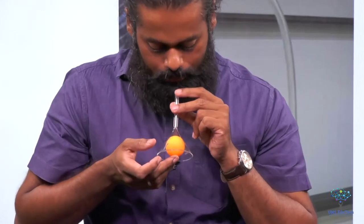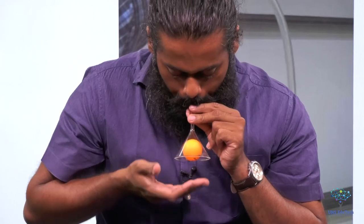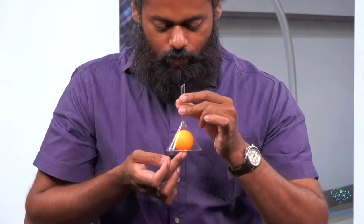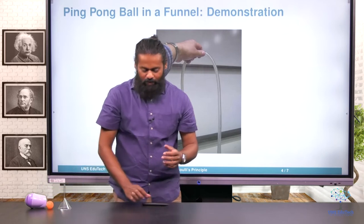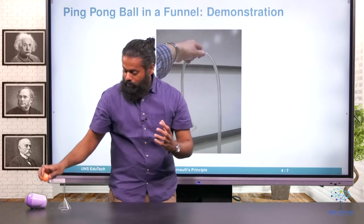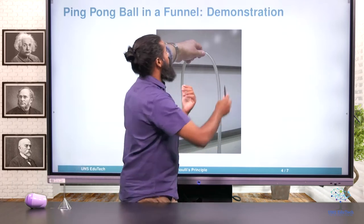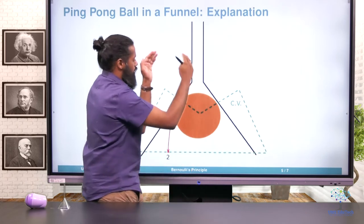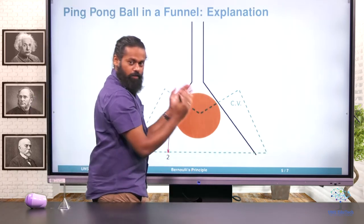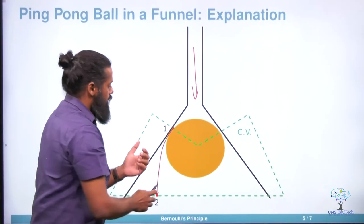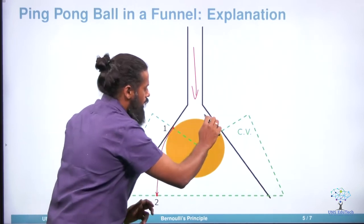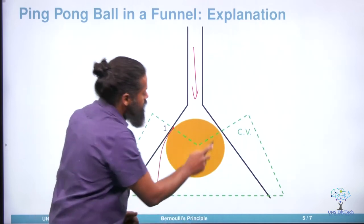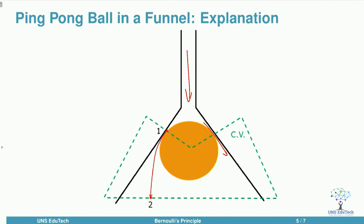I am going to blow air into this funnel. You can see air is coming in with some velocity. Once the ball is blocking the passage near the apex of the funnel — once you close that passage — only a narrow stream is available for the air. Through that narrow place, air rushes through, and as a result, velocity at that region goes up.